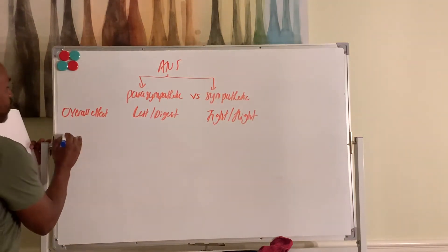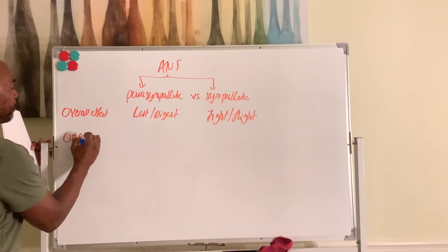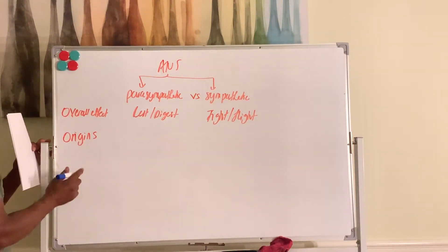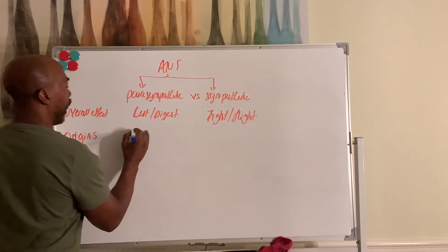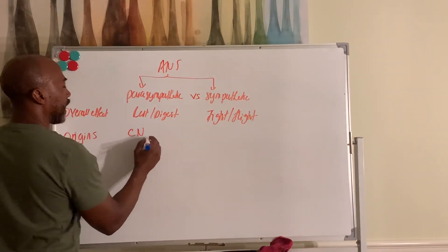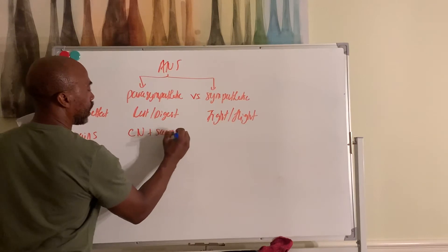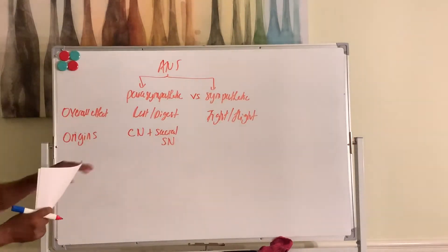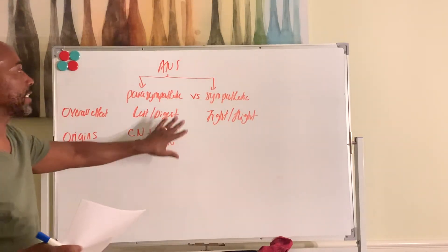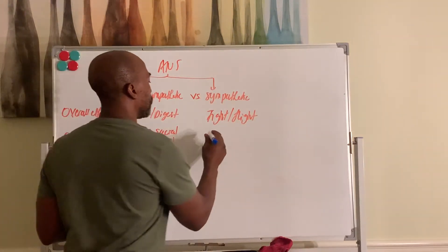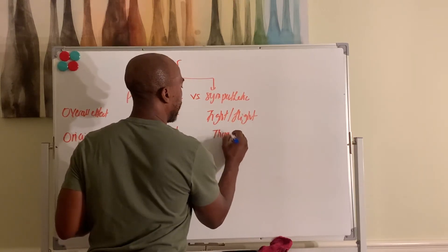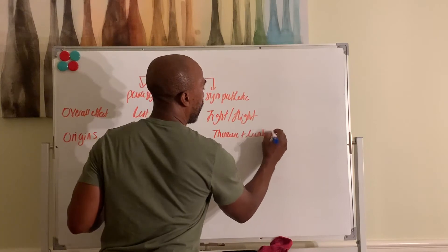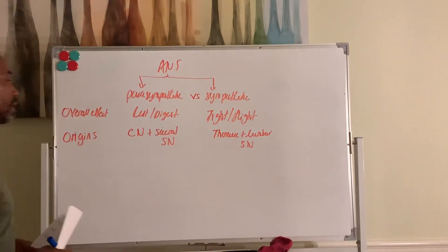In terms of where they emerge from in the CNS, the origins, points of origins, the para will use cranial nerves to exit and sacral spinal nerves. So para uses cranial nerves and sacral spinal nerves, whereas simpa uses thoracic and lumbar spinal nerves to exit the CNS.